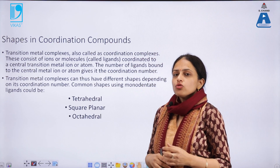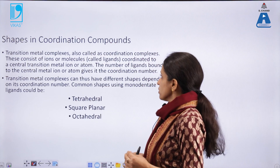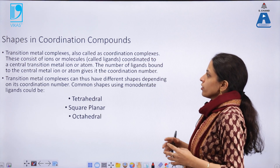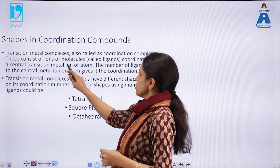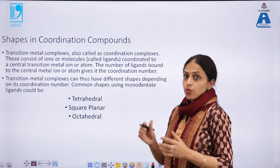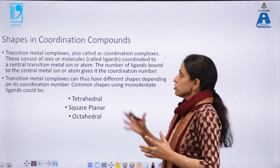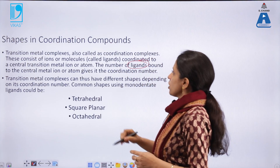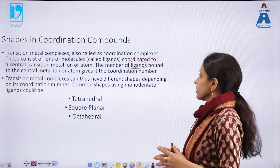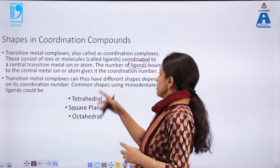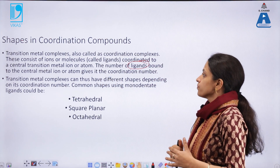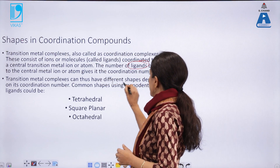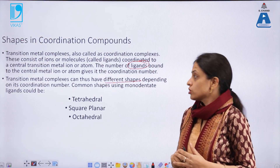Transition metal complexes are also known as coordination compounds. The ions or molecules which are coordinated to the central transition metal atom or ion give the property of the coordination number to these complexes. The coordination number is the number of ligands which are bound to the central metal atom or ion. Transition metal complexes can thus have different shapes depending upon their coordination number.